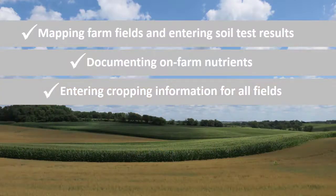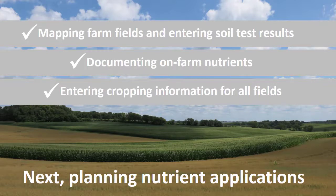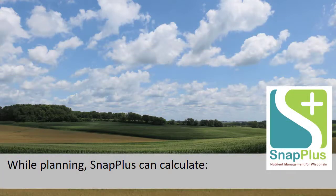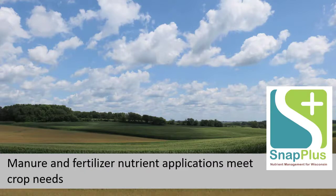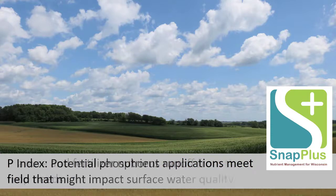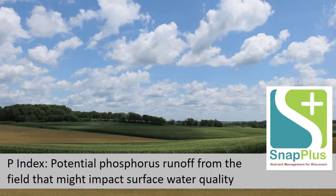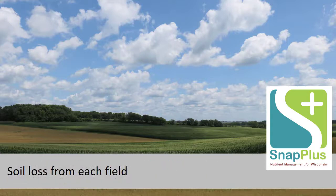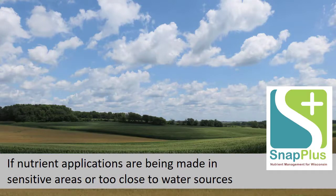Then nutrient planning can start. For each field, fertilizer and manure applications are planned to meet the needs of the crops. While this is being done, SNAP Plus can calculate if planned manure and fertilizer applications meet crop requirements, the P-Index — which is an estimate of potential runoff phosphorus from a field to nearby surface water — estimated average annual soil loss or erosion from each field, and if nutrient applications are being made in sensitive areas or too close to water sources.